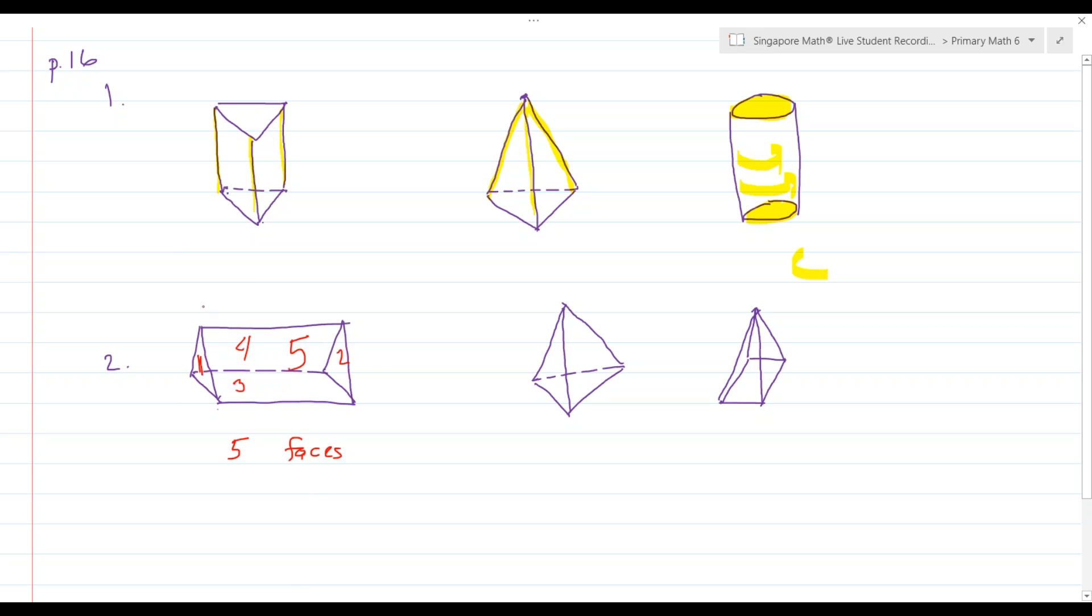Now maybe you could have looked at this and said, there are two endpoints and because the endpoints each have three sides, they're going to have three flat surfaces connecting the two endpoints. That's another way to realize that there are going to be five surfaces.